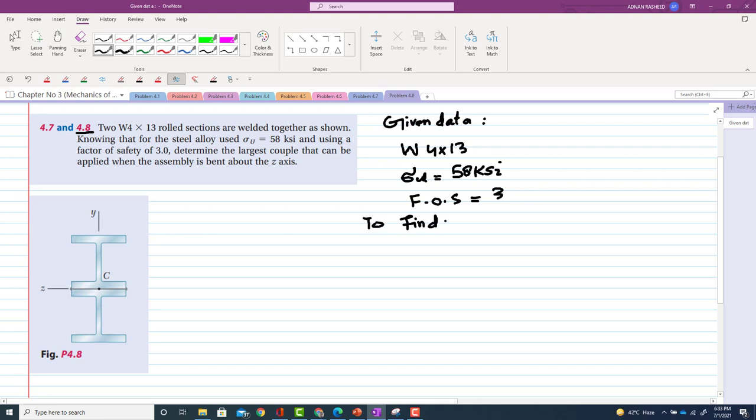Let's start with the solution. Again, this moment is equal to sigma into I divided by c. Now we will have to find I, which is not available, so we'll look in Appendix C.